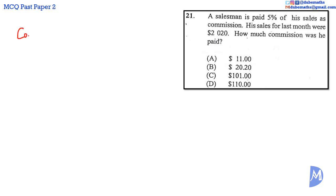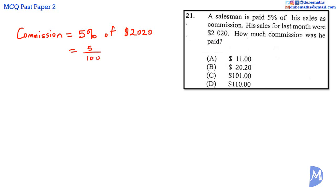Question 21. His commission is equal to 5% of $2,020. It is equal to 5 over 100 multiplied by $2,020.